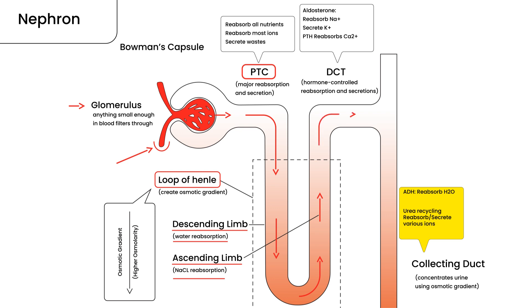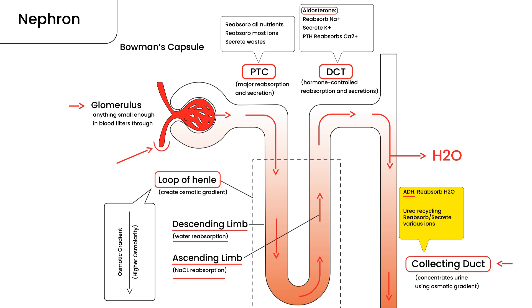Then we get up to the distal convoluted tubule, which is where aldosterone hormone works. And finally, the last part is called the collecting duct. What comes out of the collecting duct is essentially urine, because everything that needs to be reabsorbed has happened. Now you just have waste left over in the form of urine. This is what we need to talk about — the collecting duct — because this is where ADH works. ADH works on the collecting duct by bringing back water, reabsorbing water back into your system from the urine.